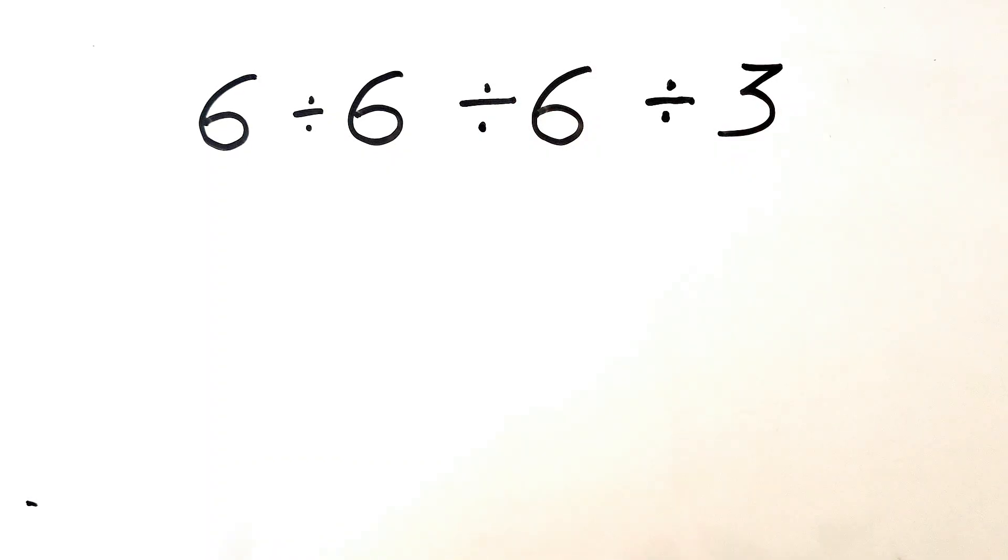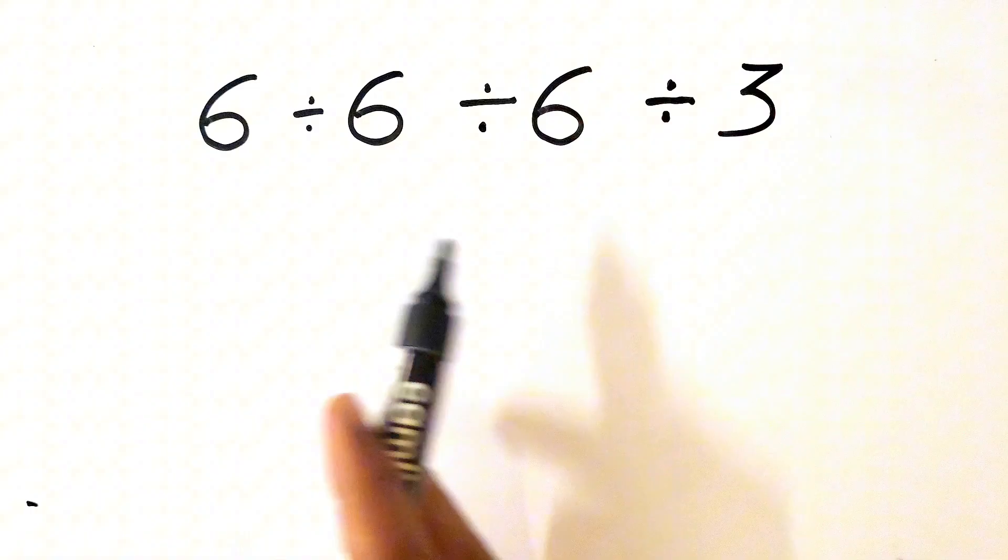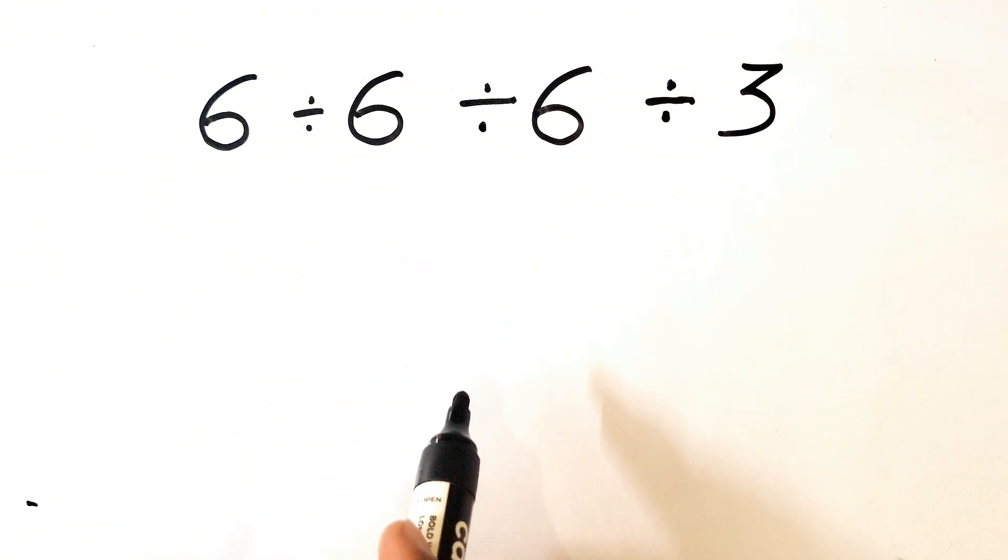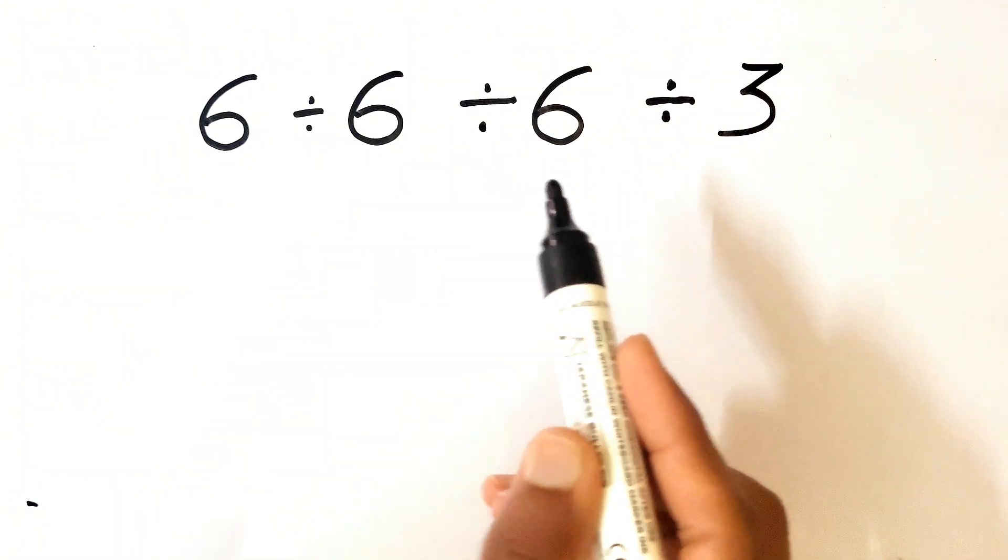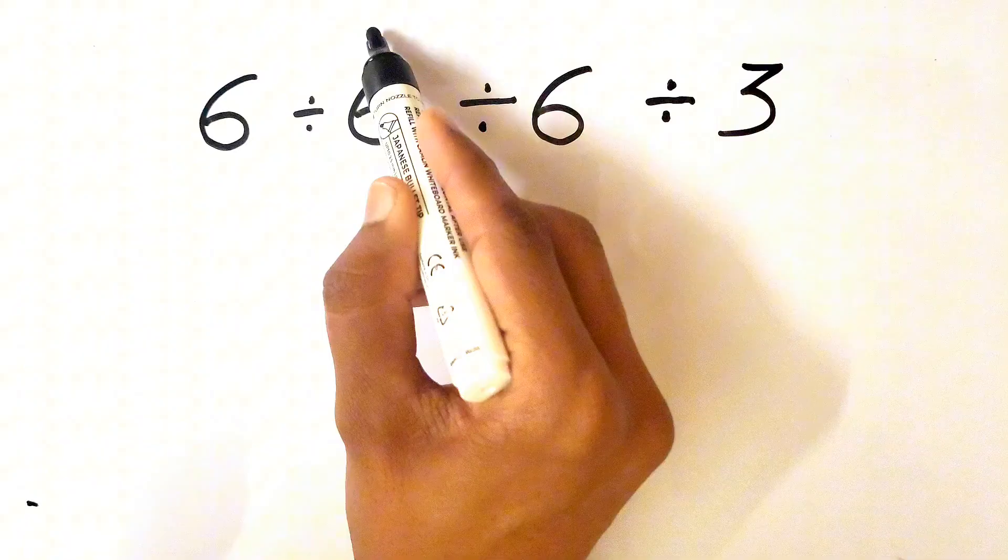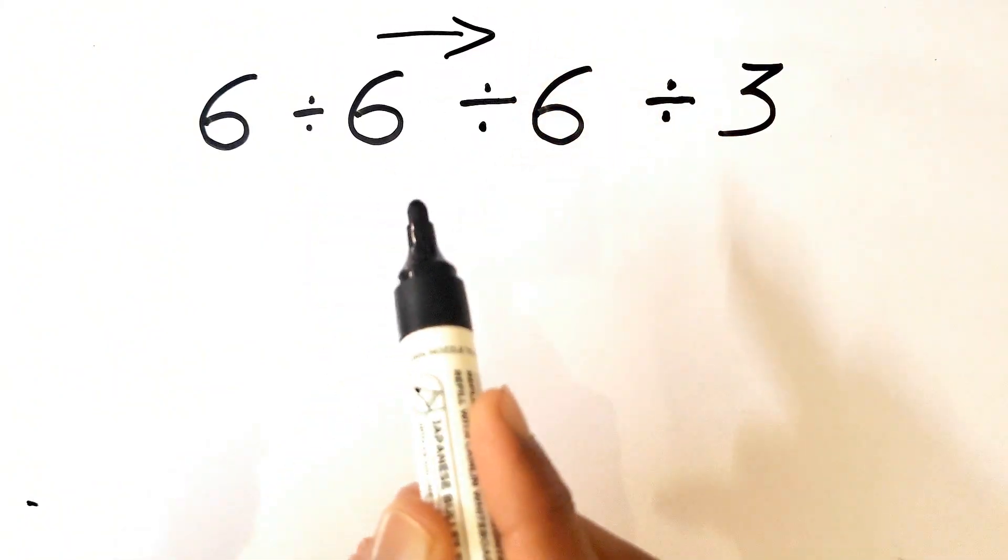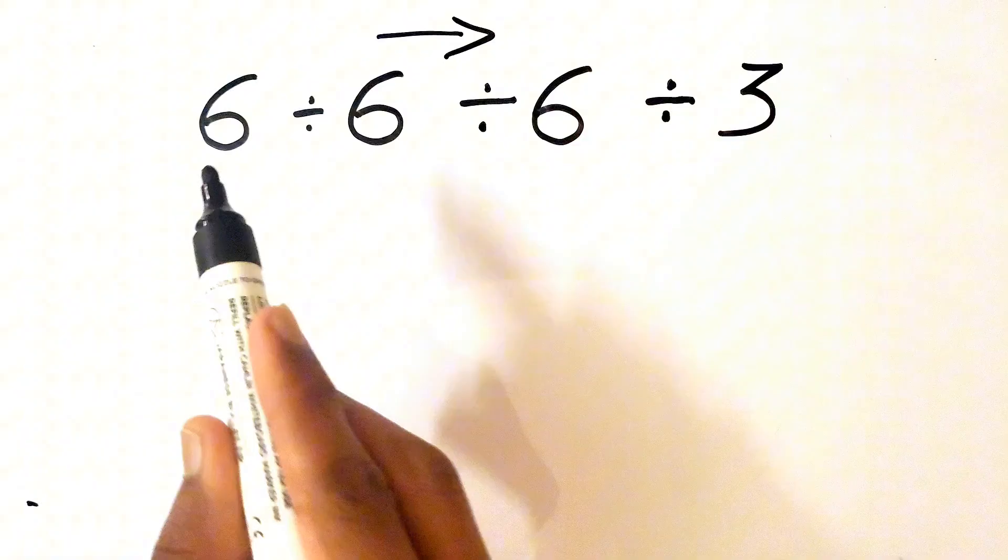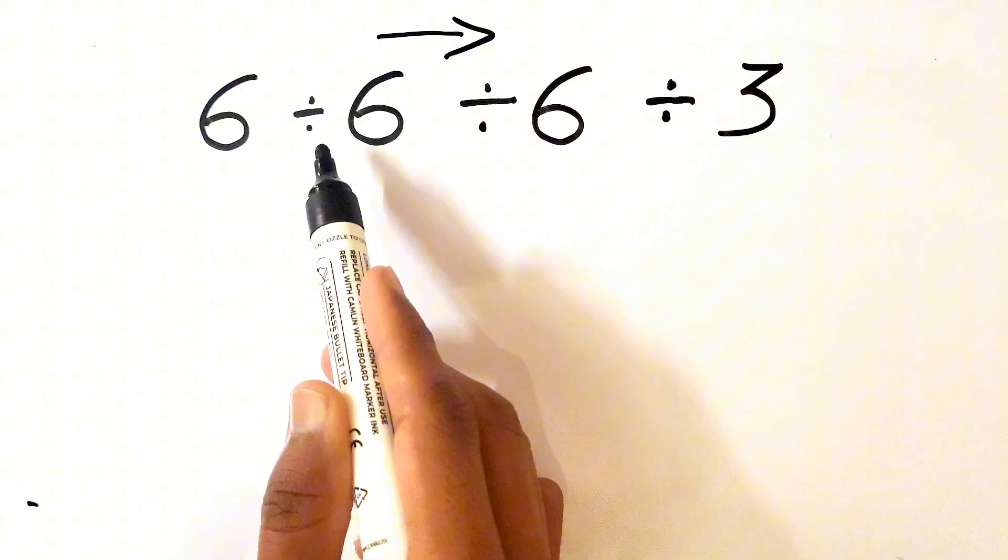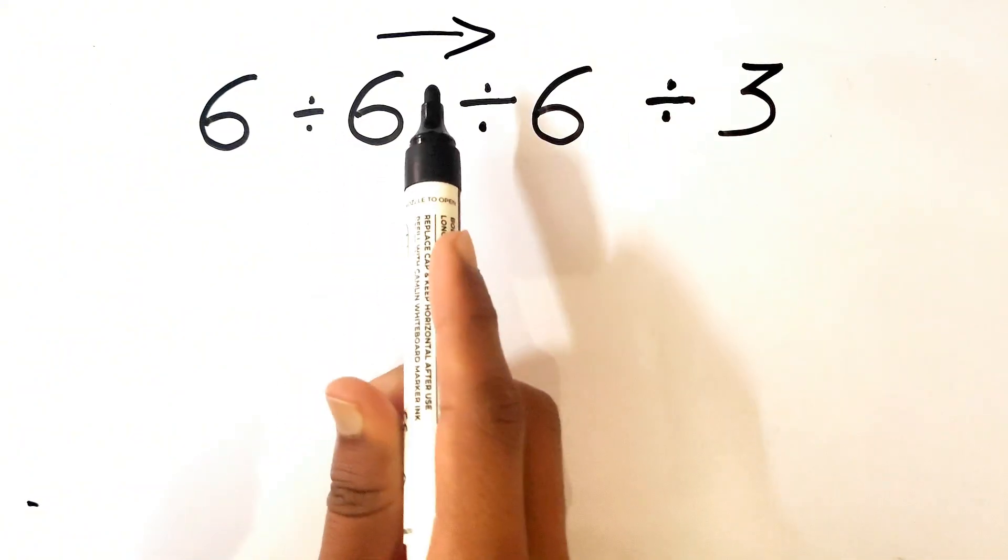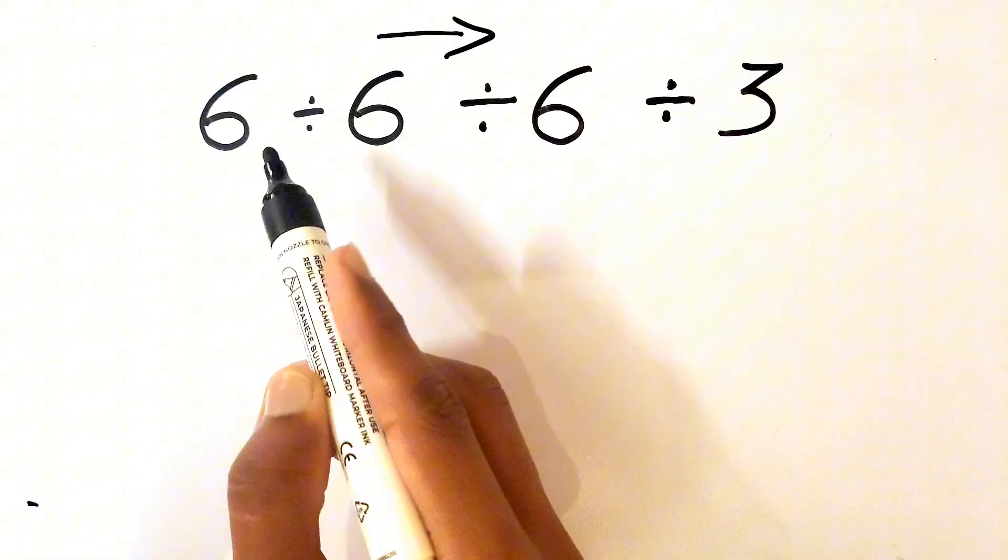Welcome back guys! Most people make a mistake when solving this expression, so let's try solving this in a proper manner. First, we need to solve this expression by going from left side towards the right, because the order of operations tells us to go from left side towards the right if all the signs are the same.